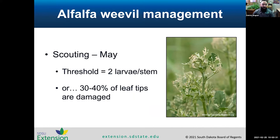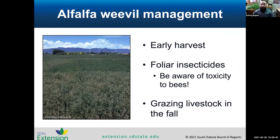You'll want to scout starting in May with spring green-up, since they show up right away. The threshold is about two larvae per stem, or if you have 30 to 40 percent of the leaf tips being damaged. For management, one option is doing an early harvest. The main tool is foliar insecticides — usually a tank mix of a pyrethroid and a generic chlorpyrifos (loresban), which gives you immediate knockdown and a good residual so they don't just reinfest the field right away.